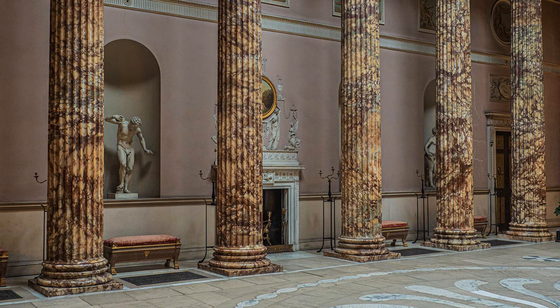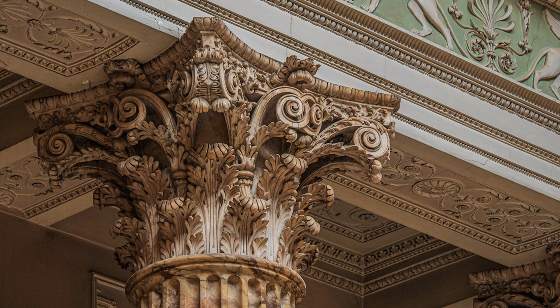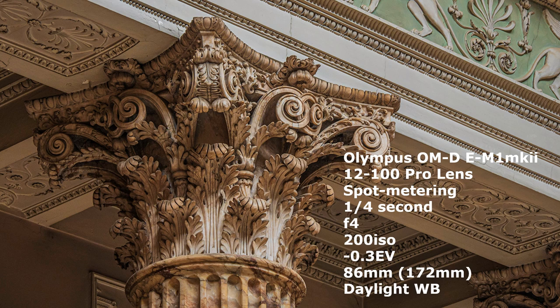At Kedleston, I had the opportunity to test image stabilisation again in camera and lens. Yes, the two are working together, allowing me to shoot close in at a quarter of a second. The focal length of my lens is now set at 86mm, that is 172mm in film, so quite a decent telephoto, increasing the spectre of camera shake.